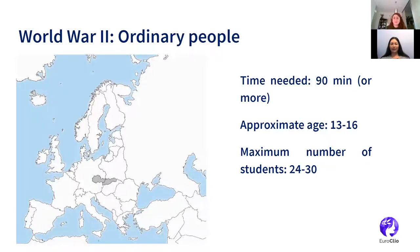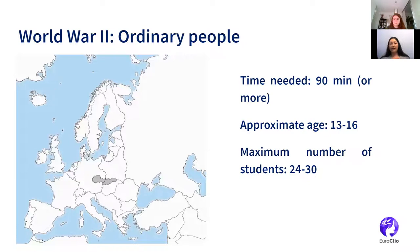For the implementation of Helen Snelson's strategy, I chose a teaching unit about the Second World War — specifically everyday life and suffering — called 'World War Two: Ordinary People.' In my country, school hours last 45 minutes each, so this teaching unit is designed for two school hours, with a minimum of 90 minutes needed. This teaching unit is taught in the last eighth grade of elementary school and the second, third, or fourth grade of secondary school, depending on the type of school and the curriculum.